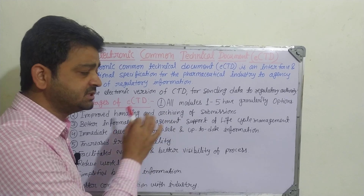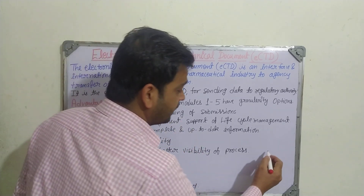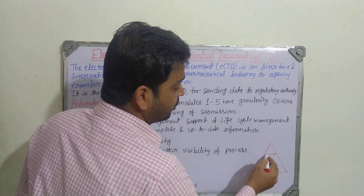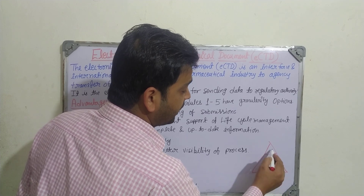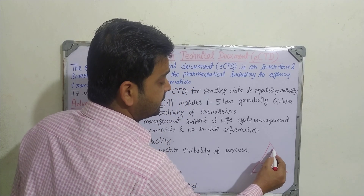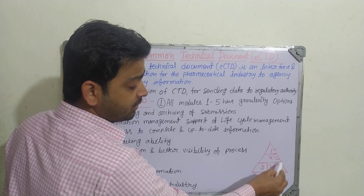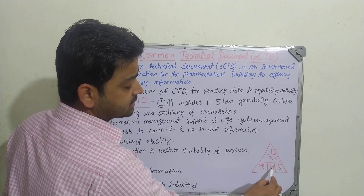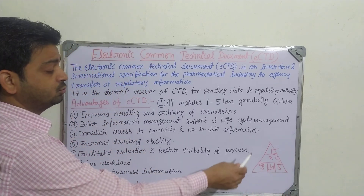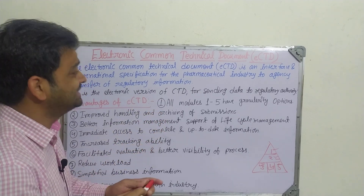In the exam, you can find the triangle model of the CTD — module one, module two, module three, module four, and module five. Here is the name of the pharmaceutical company; here clinical and pre-clinical overview and summary; here quality parameters; here non-clinical summary; here clinical summary. So those things are there, and whenever we are filing this data online, that is called the eCTD.